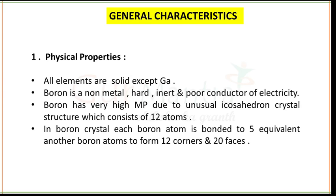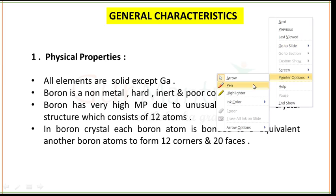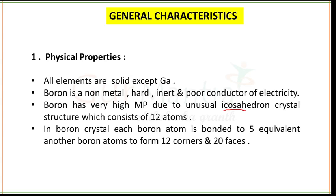Talking about the general characteristics of group 13 elements — physical properties: all elements except gallium are solid. Boron is a non-metal, hard, inert (meaning it does not react generally), and a poor conductor of electricity. Boron has a very high melting point due to its unusual icosahedron crystal structure. In a boron crystal, each boron atom is bonded to five equivalent boron atoms to form 12 corners and 20 faces.